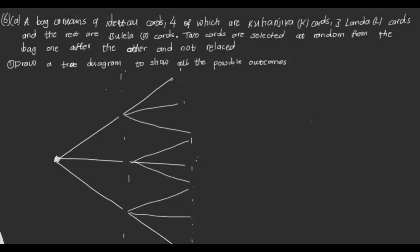Let's continue with the revision of mathematics paper 2. We have question 6a, a probability question. The question reads: a bag contains nine identical cards, four of which are Kwanjuka cards, three Landa cards, and the rest are Vulela cards. Two cards are selected at random from the bag, one after the other and not replaced. Part one: draw a tree diagram to show all the possible outcomes.